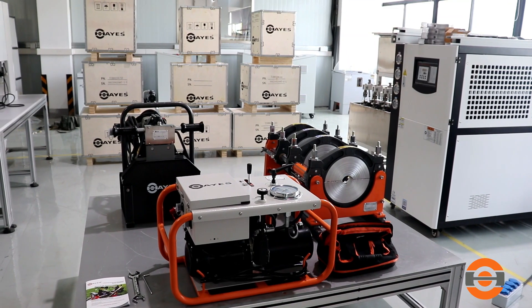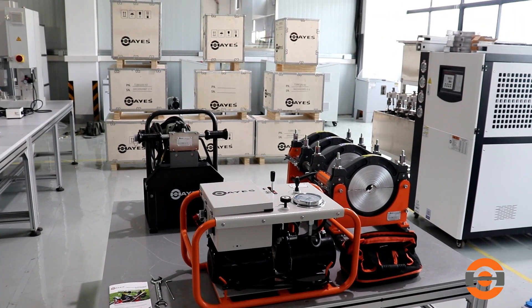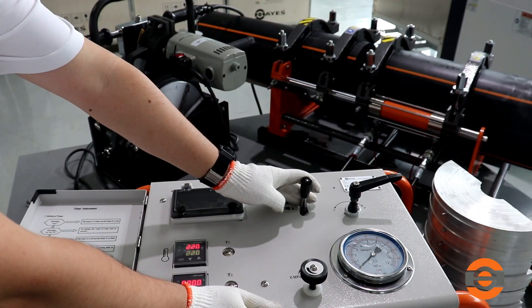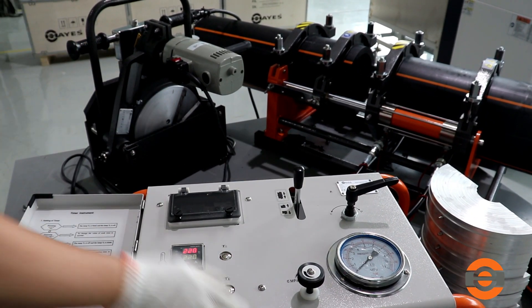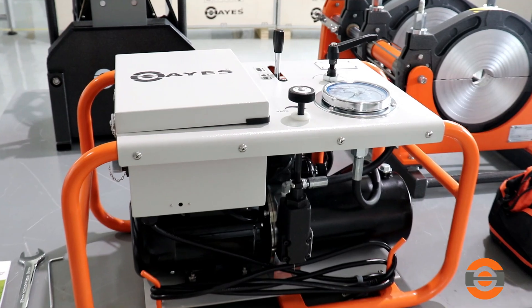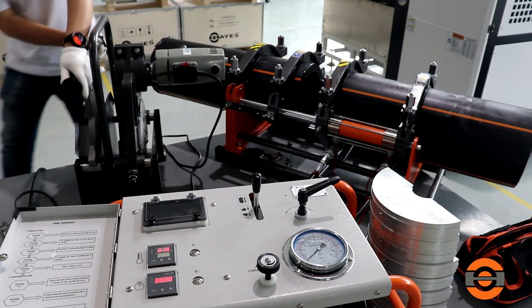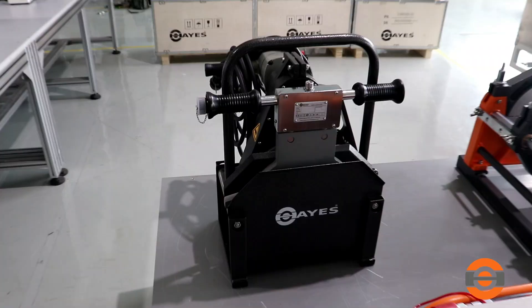The Hayes Turbo is a commercial-grade butt fusion machine, reliable and hydraulic-assisted. The machine consists of a pipe-alignment carriage, insert sets, hydraulic power unit, Teflon-coated heating plate, electric trimmer, and electric stand.